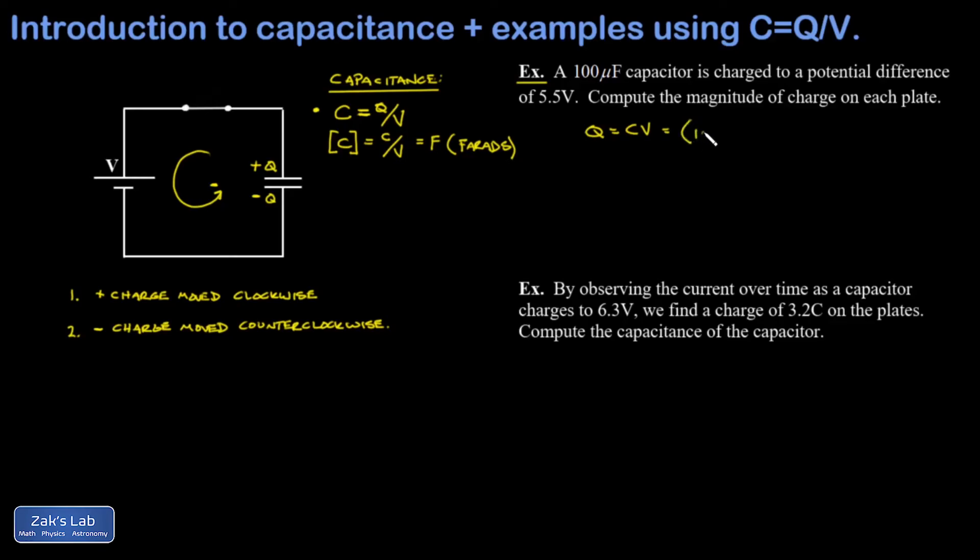And I have a 100 microfarad capacitor. I'm just going to go ahead and leave the prefix of micro in there. And I have 5.5 volts of potential difference across the plates. And this gives me 550 micro coulombs of charge. So that's one way to answer the question correctly. If you want to write it in scientific notation, that's 5.5 times 10 to the negative 4 coulombs, just replacing that micro prefix with 10 to the negative 6. That's how I arrive at my scientific notation answer.